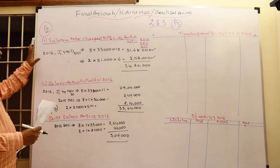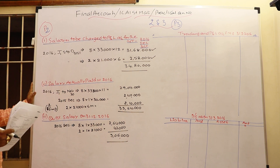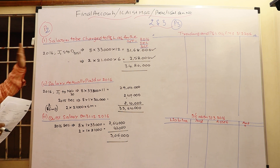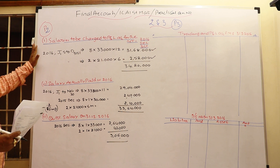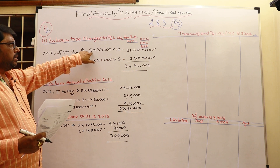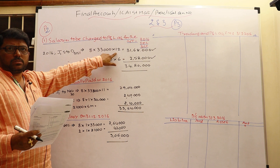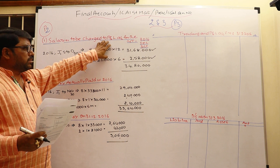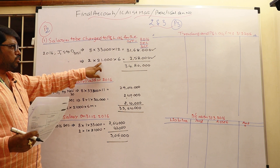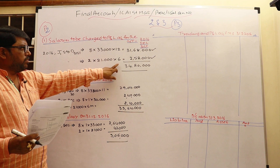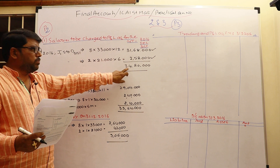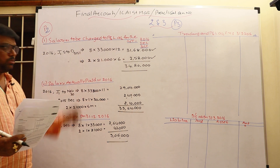To summarize: ₹34,20,000 is charged to P&L; ₹33,54,000 is actually paid during 2016; and ₹3,06,000 is outstanding salary. For the P&L charge: 8 employees at ₹33,000 for 12 months — 11 months paid, one outstanding, but the total is charged. Two trainees at ₹21,000 for 6 months — five months paid, one outstanding — total charged to P&L.